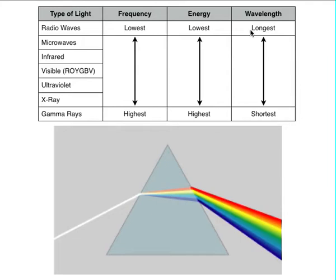longest wavelength to the highest energy, highest frequency, and shortest wavelength. Radio waves have the least frequency, least energy, and longest wavelength. Gamma rays have the highest energy, highest frequency, and shortest wavelength.